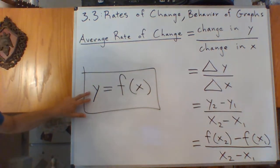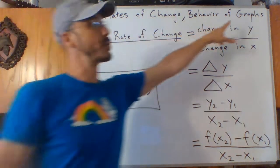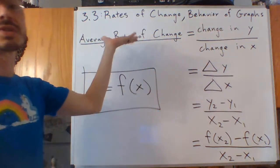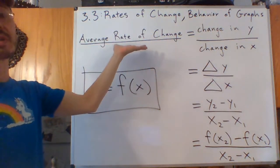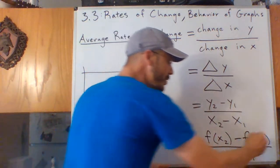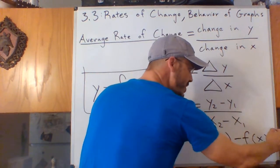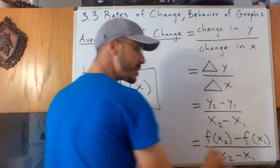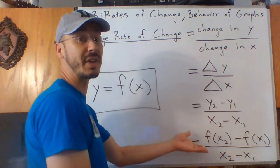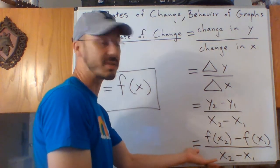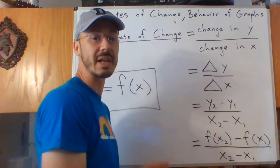So F of X2 minus F of X1 divided by X2 minus X1 — it's the same idea as the slope formula, only here Y is given to us by our function values, so Y equals F of X. We're looking at average rates of change: delta F over delta X, the difference of the function values over the difference of the X values.